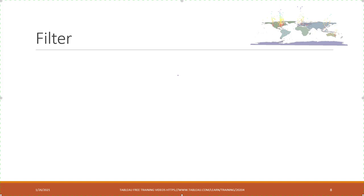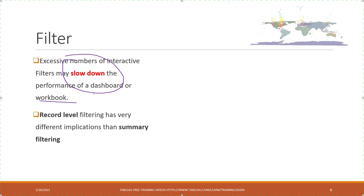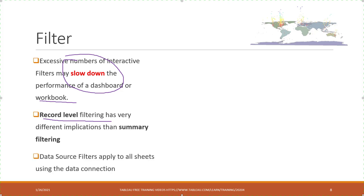Now let's talk about filters. We've been using filters throughout the semester, but keep in mind that using a lot of filters will slow down the performance of the dashboard or workbook. Do not use too many filters as it makes queries more complicated. Also remember that the order of filters will produce different results, so you need a good understanding of your filters. For example, record-level filtering may have very different results than summary filtering.